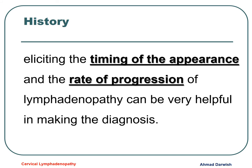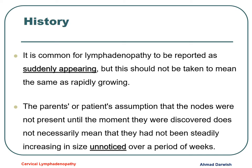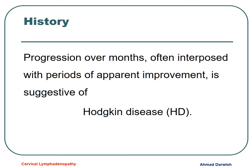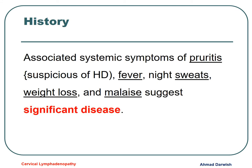We have to elicit the timing of appearance and the rate of progression of the lymph node. It's common for lymph nodes to be reported as suddenly appearing, but this is not always true as the parents may not have noticed them, and they could have been present for weeks. Progression over months could indicate Hodgkin disease. The presence of persistent fever, night sweats, and weight loss should raise suspicion for malignancy, TB, or sometimes collagen disease.